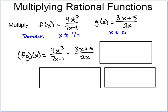We have f(x) equals 4x³ over 7x minus 1, and g(x) is 3x plus 5 over 2x. The domain of the first function is x cannot equal 1/7, and the domain of the second function is x cannot equal 0. We're going to keep those in mind for the final answer. Now we're multiplying them, putting them together just like we put other fractions together: 4x³ over 7x minus 1, times 3x plus 5 over 2x.